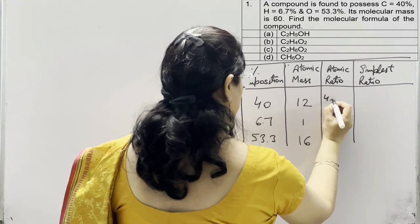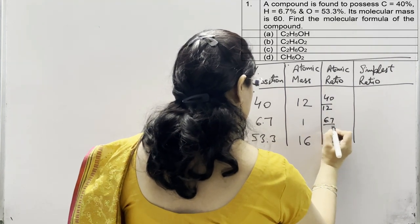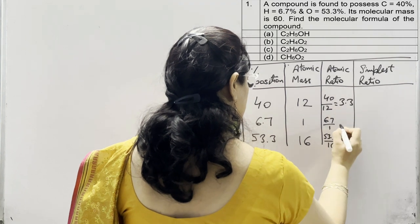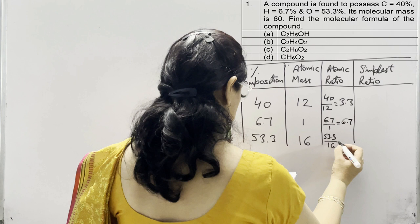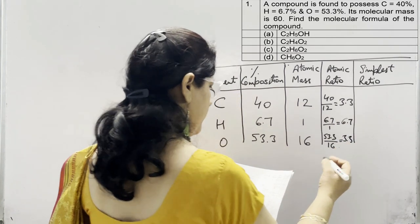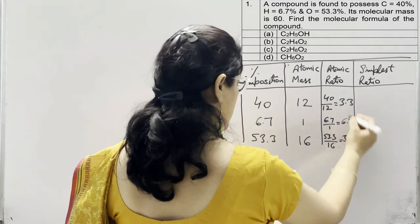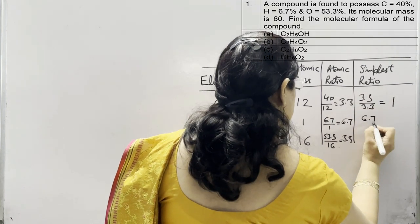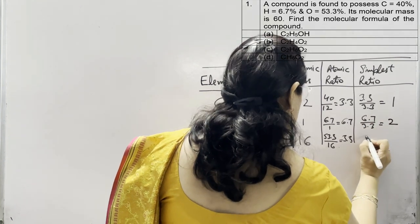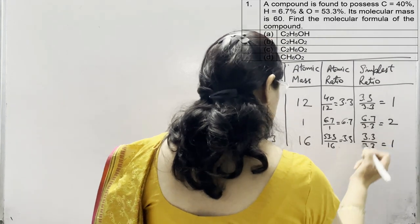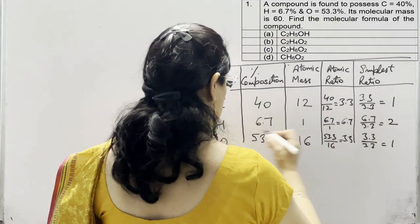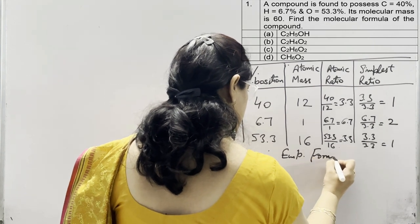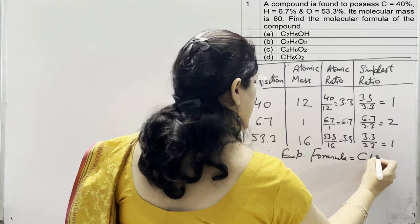The atomic ratios are: 40/12 for carbon, 6.7/1 for hydrogen, and 53.3/16 for oxygen. The values come out to be 3.3 for carbon, 6.7 for hydrogen, and 3.3 for oxygen. For the simplest ratio, we choose the smallest value, which is 3.3. So: 3.3÷3.3 = 1 for carbon, 6.7÷3.3 = 2 for hydrogen, and 3.3÷3.3 = 1 for oxygen. Therefore, the empirical formula is CH₂O.